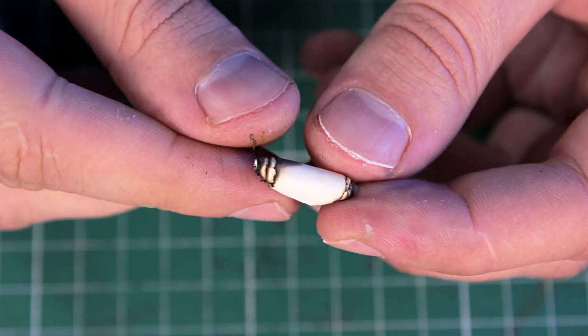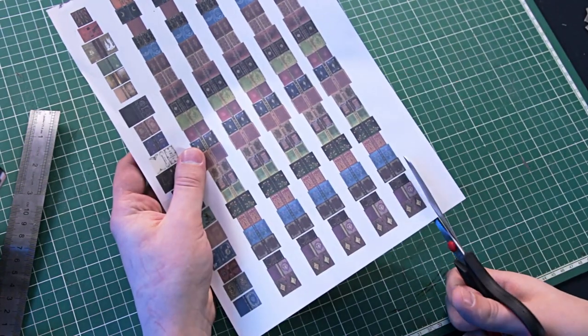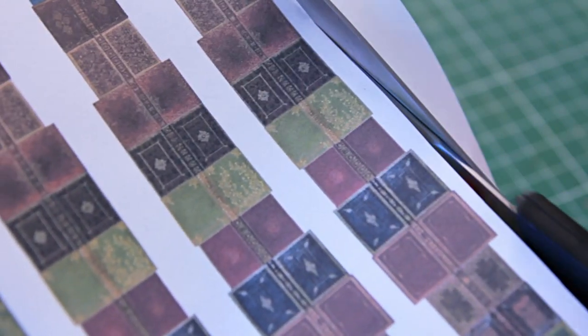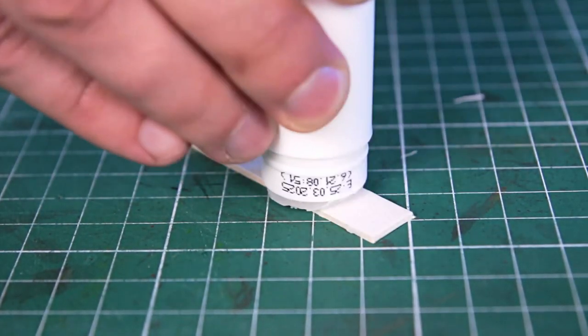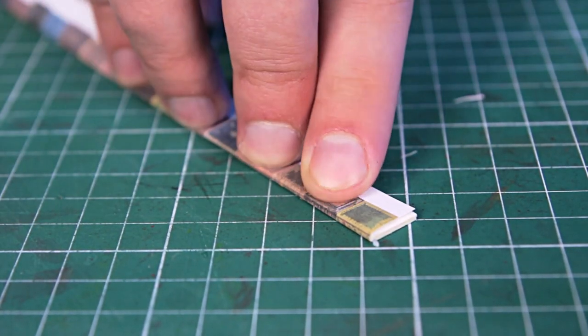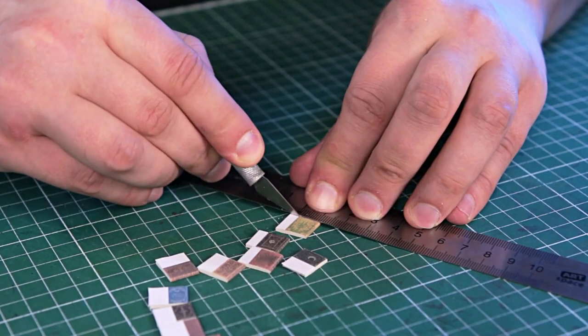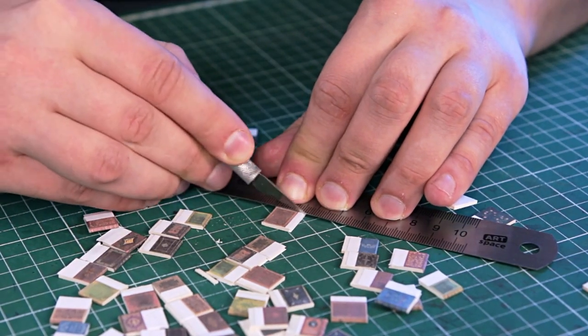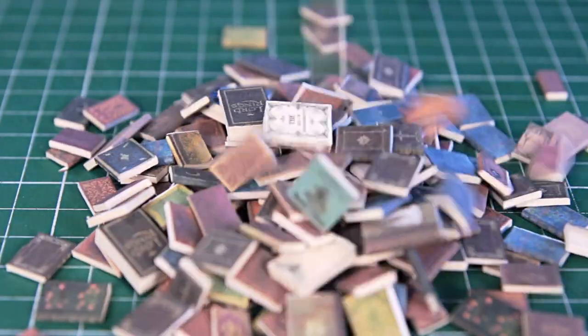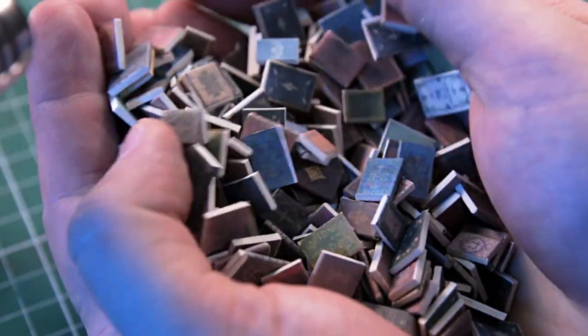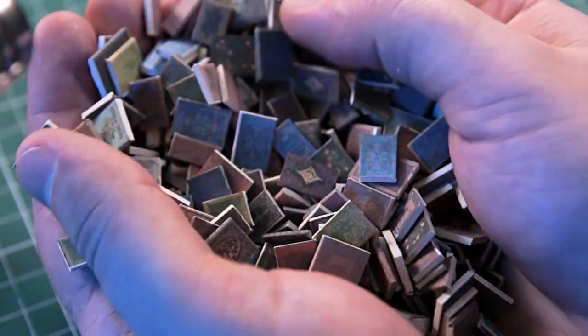To create the books I printed out a sheet like this. You need to cut these strips and glue them to a 2 mm thick cardboard. When the glue dries, all you have to do is cut them off. I've done a lot of books, some of them thicker than others. Look at this. That's 300 books.